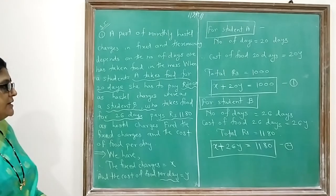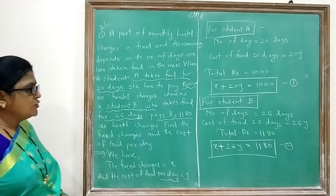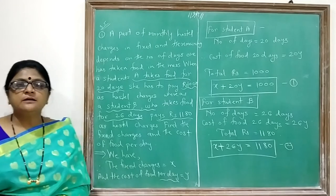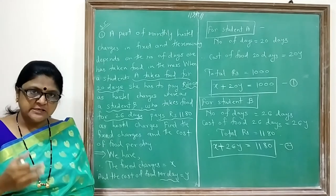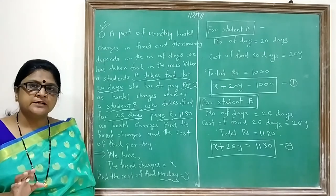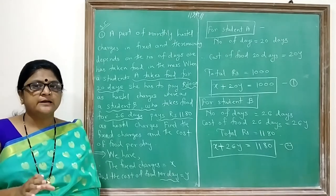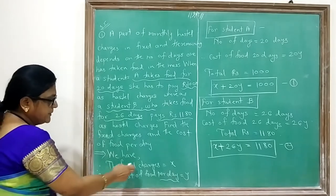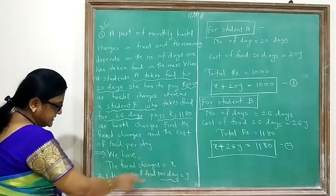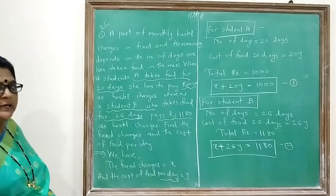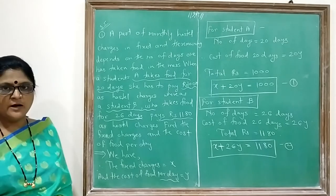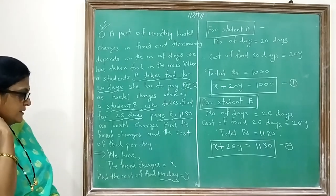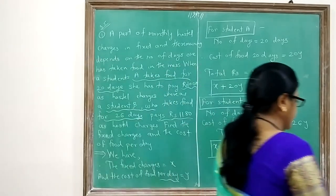Now you can use any method — elimination method, substitution method, or cross multiplication method — to solve and get the values of X and Y, which are the fixed charge and cost of food per day. See the next example.